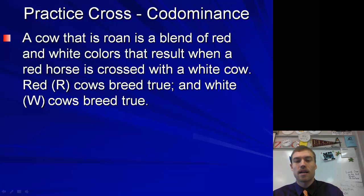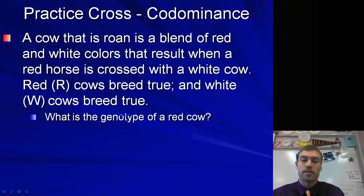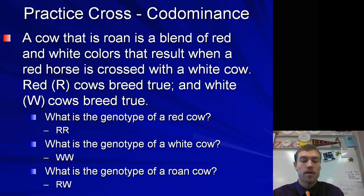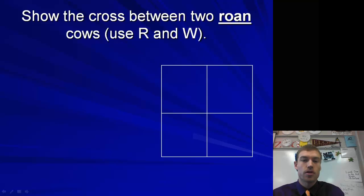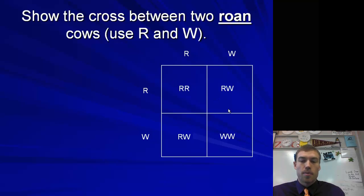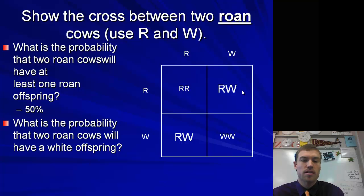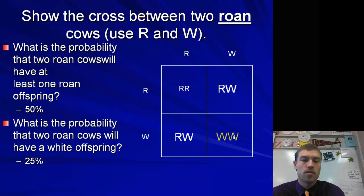Let's do a practice test cross. A red cow would be big R, big R. White cow would be big W, big W. Roan cow is R, W. We're going to show a cross between two roan cows. There is our Punnett square. So these are our possible genotypes. The probability that two roan cows will have at least one roan offspring would be 50% or one half. The probability that they would have a white offspring would be 25% or one fourth.